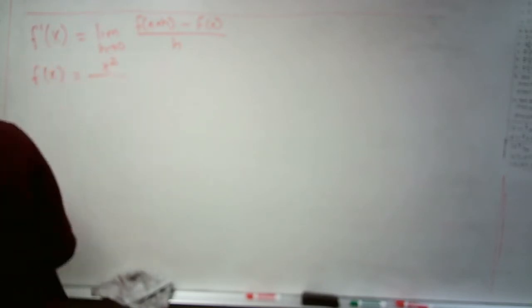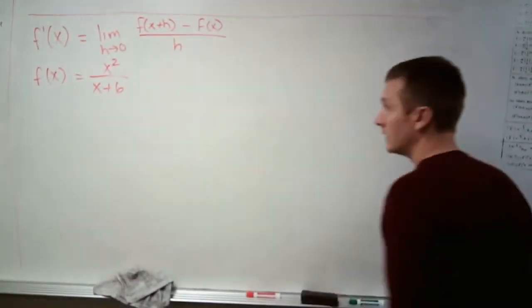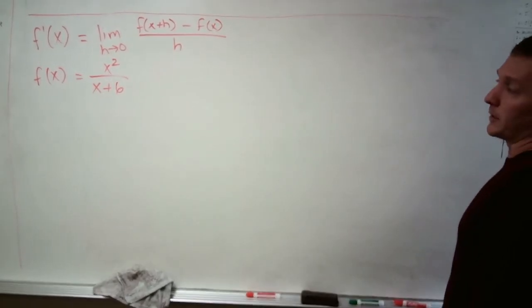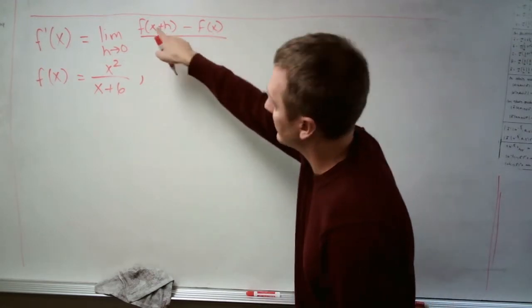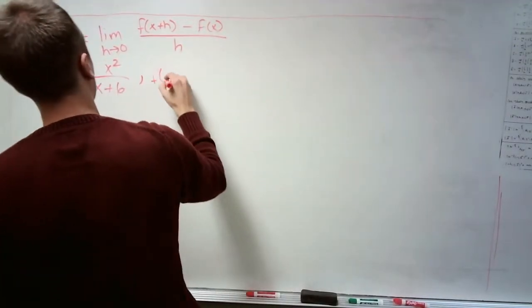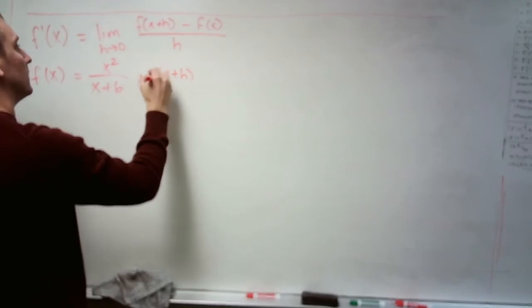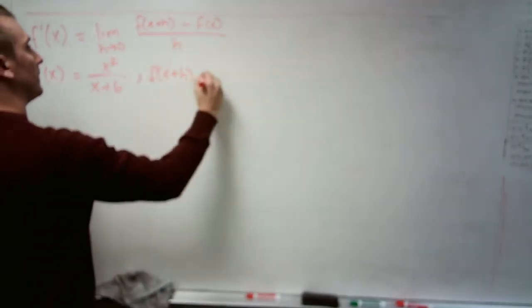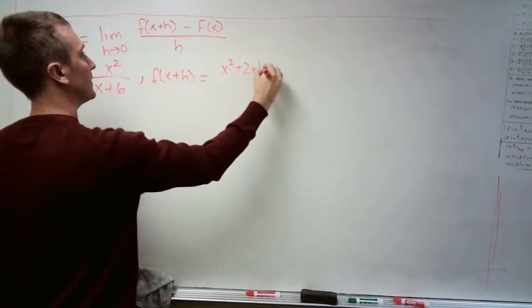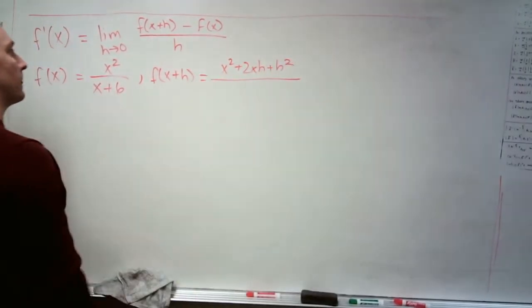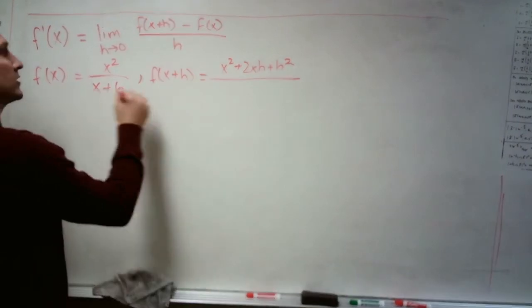Okay, so here's the function that we're working with here. We're going to go with x squared divided by x plus 6. It's a pretty algorithmic thing that we're doing here. The next thing that we always do after being given our function is find this, f of x plus h. And that is just x plus h squared, x squared plus 2xh plus h squared, all divided by x plus h plus 6.